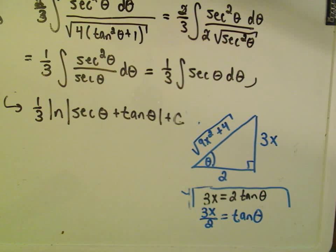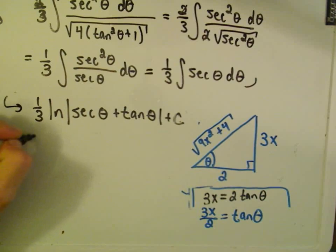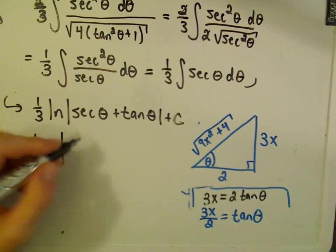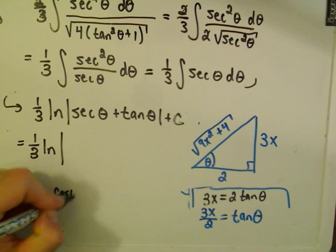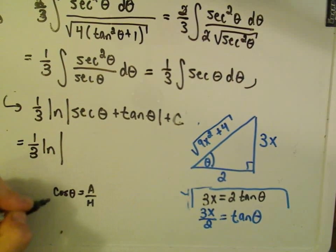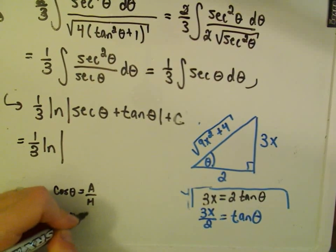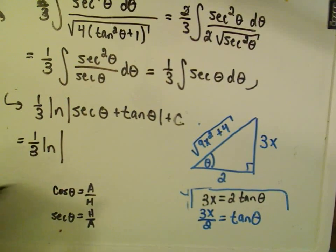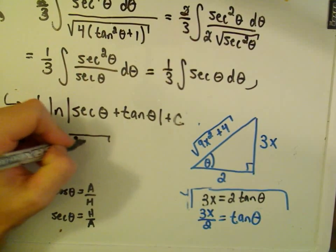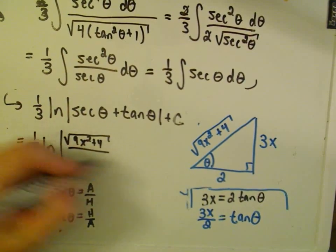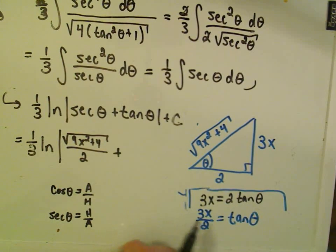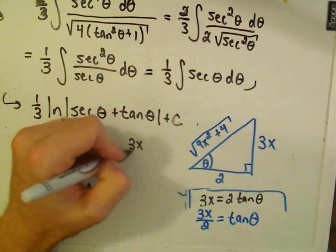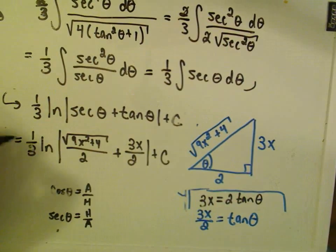So now I can just plug all of this stuff into my formula here. It says we get 1 third the natural logarithm secant theta. Well, remember cosine of theta is adjacent over hypotenuse. So 1 over cosine is secant theta. So that'll give you hypotenuse over adjacent. The hypotenuse being 9x squared plus 4. The adjacent being 2. Tangent theta, again, we could read off from the triangle, but it's right here. It's what we just had. So 3x over 2 plus c. And that'll be your answer to this problem.